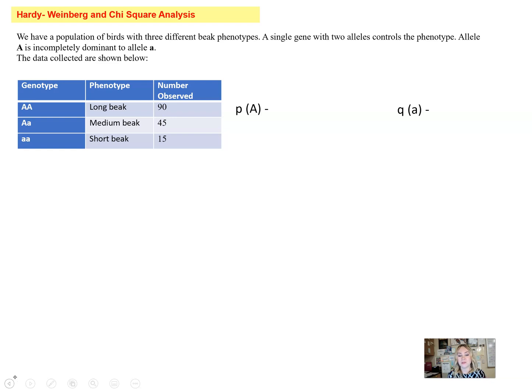Let's get started. We have a population of birds and they have three different beak sizes. A single gene with two alleles controls that phenotype. Little big A is incompletely dominant to little a, so the genotype big A big A is going to give rise to long beaks, big A little a is going to give rise to medium beaks, and little a little a gives rise to short beaks.